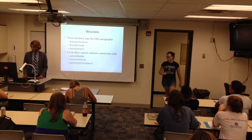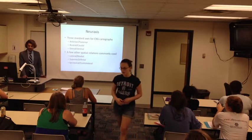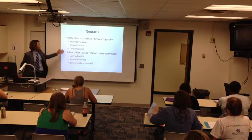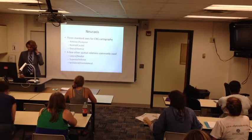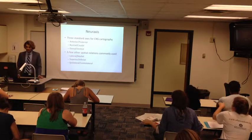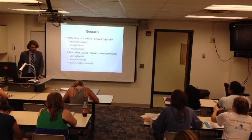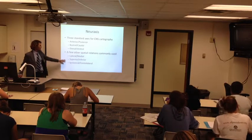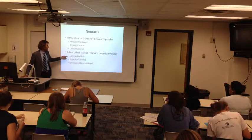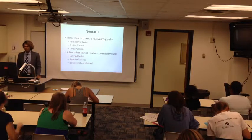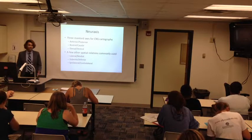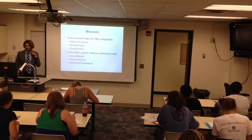I want to review some basic terms the textbook covers in detail. There are three standard axes for mapping inside the central nervous system: the anterior-posterior distinction, the rostral-caudal distinction, and the dorsal-ventral distinction. There are also other important spatial relations — lateral and medial are important concepts.